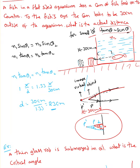N2 times sine theta2 — and for small angles, sine theta2 equals tan theta2. So tan theta2 is x over 30 centimeters, which is the given apparent distance. From that I can find the d value: the actual distance is 23 centimeters.